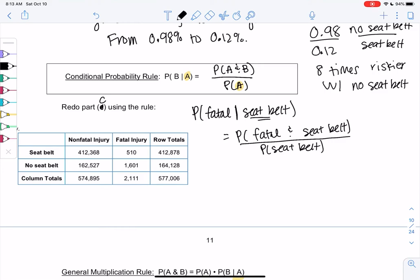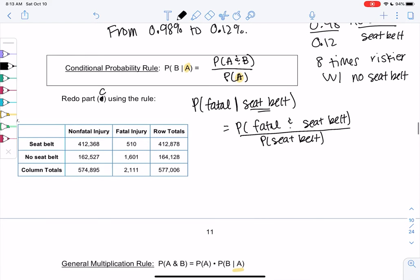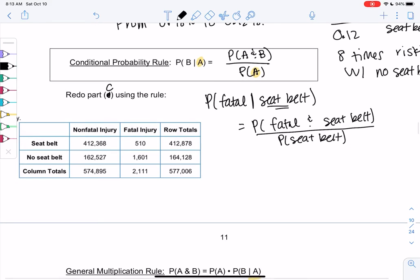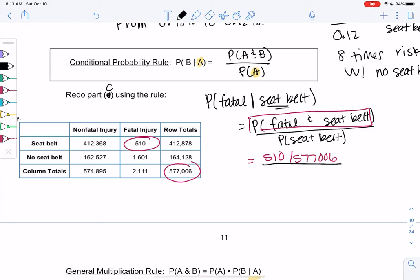We're no longer doing givens in the math. The formula has changed it so we can do regular probabilities. So the and case, fatal and seatbelt, we go to the overlap of fatal and seatbelt, which is 510. It's out of everyone because we're no longer doing givens when we change the formula. So 510 out of 577,006.